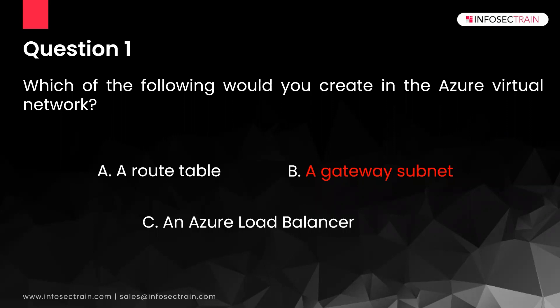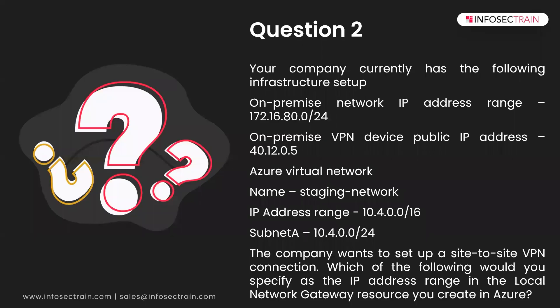Question two uses the same infrastructure: on-premise network IP range 172.16.80.0/24, on-premise VPN device public IP 40.12.0.5, Azure virtual network staging network with range 10.4.0.0/16, subnet A range 10.4.0.0/24. The company wants to set up a site-to-site VPN connection. Which IP address range would you specify for the local network gateway resource you create in Azure?